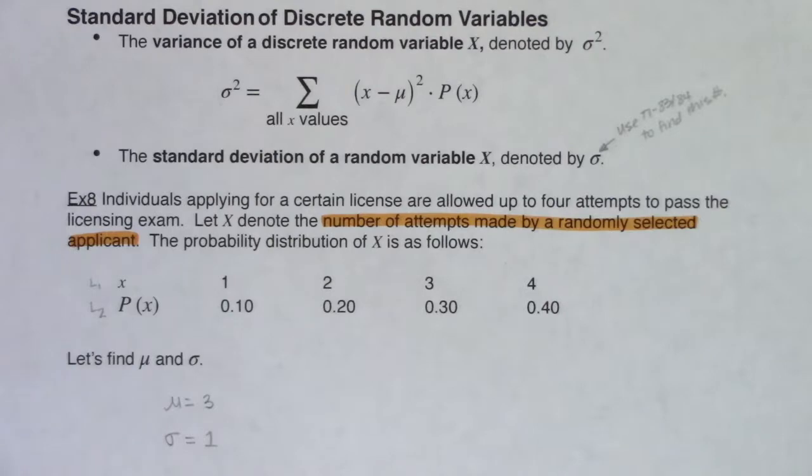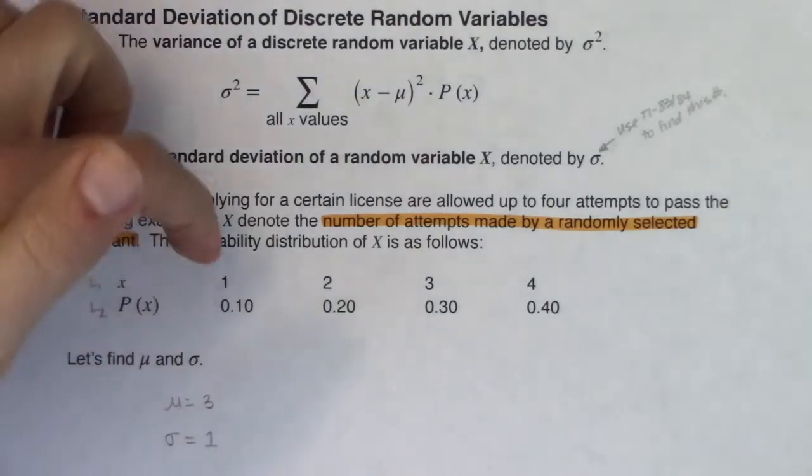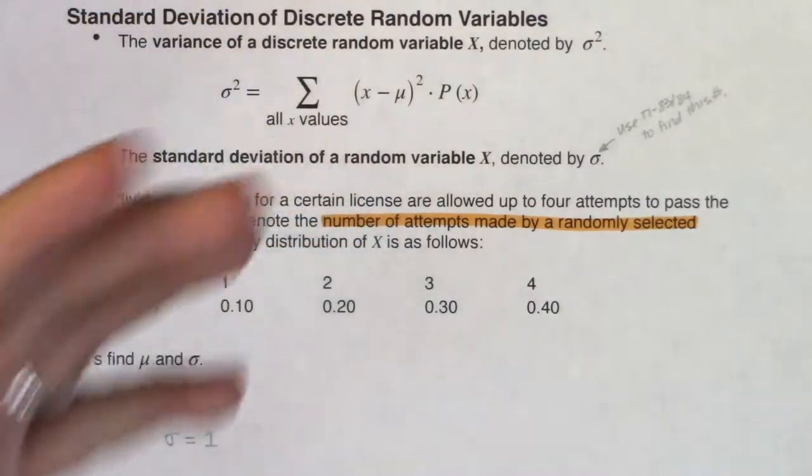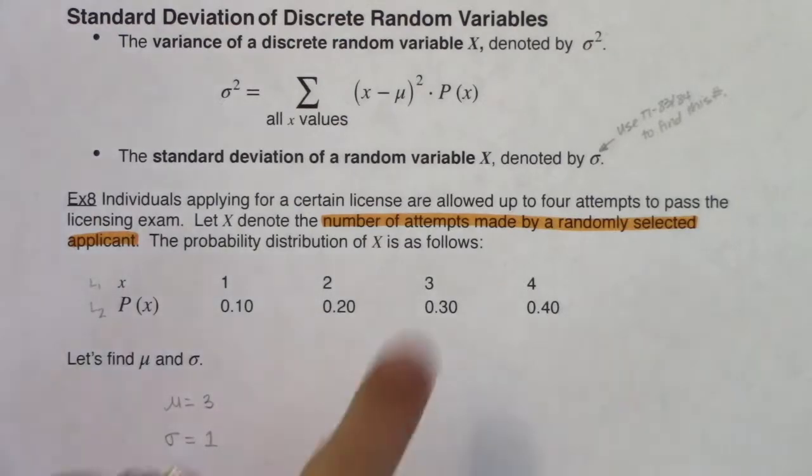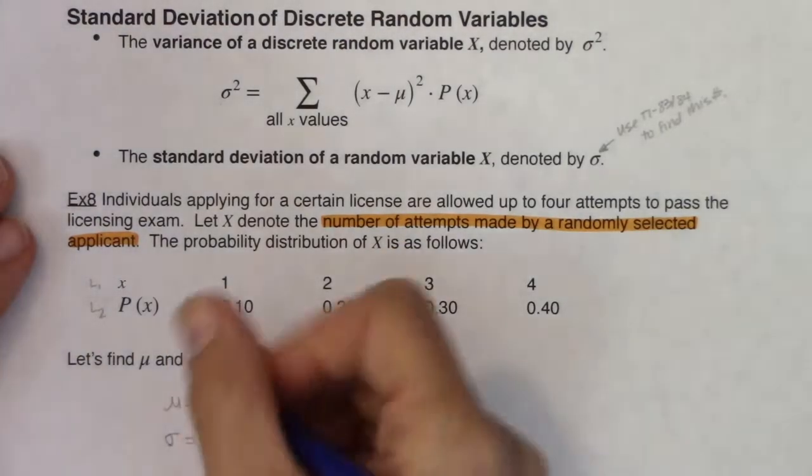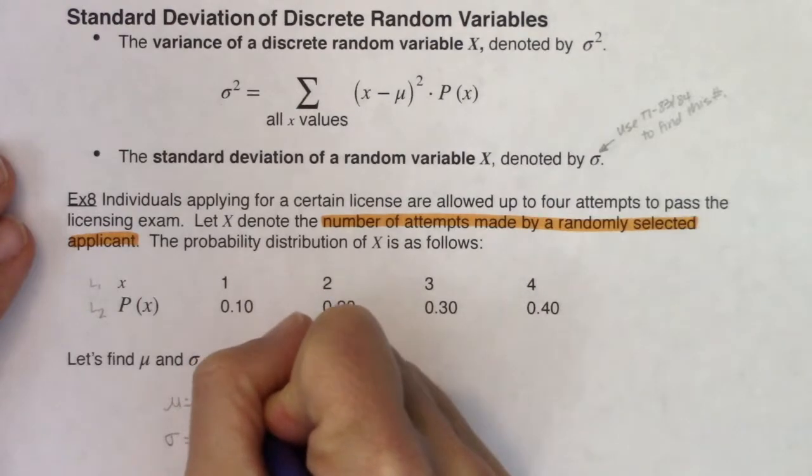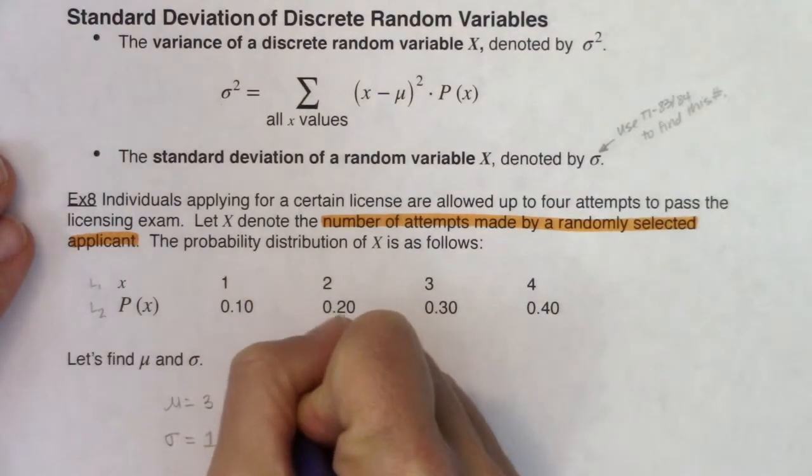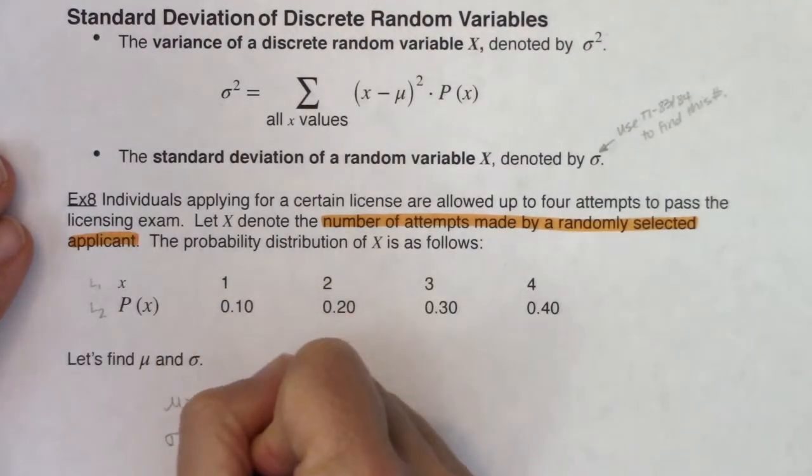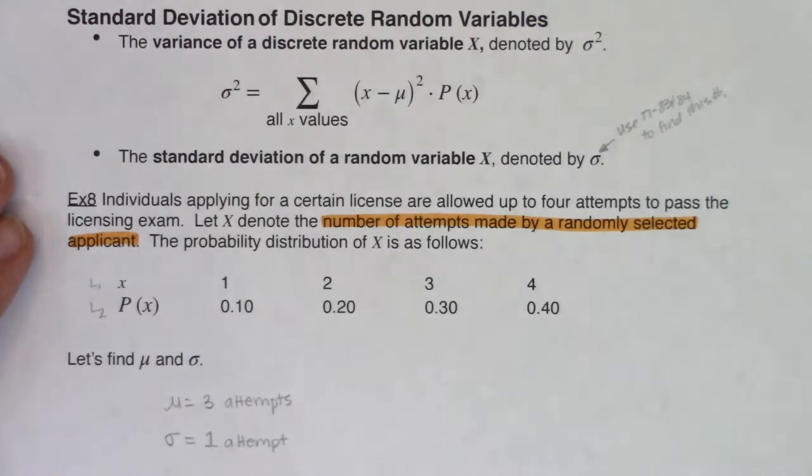And with everything, you need some units. So what are the units on this? Well, what was this? It was the number of attempts made by an applicant. So this was three attempts. So on average, somebody has to take this test for their license three times. And the standard deviation was one attempt.